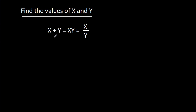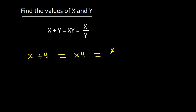In this video, we have been given that x plus y is equal to x times y, and x times y is equal to x divided by y. We have to find the values of x and y. Since y is in the denominator, y cannot be equal to 0.